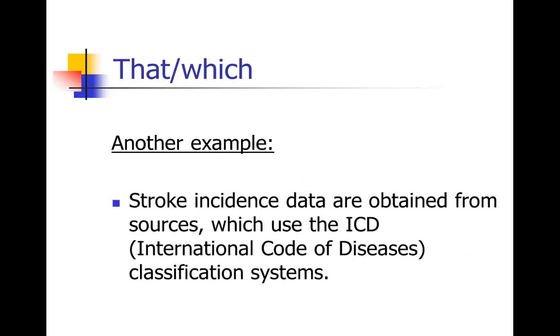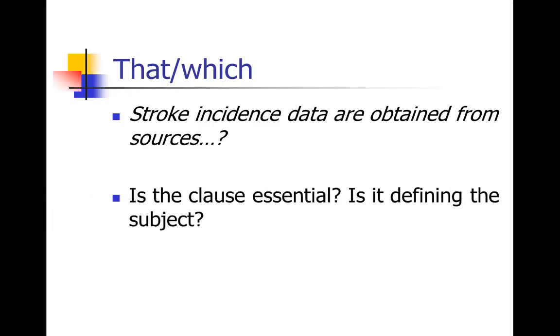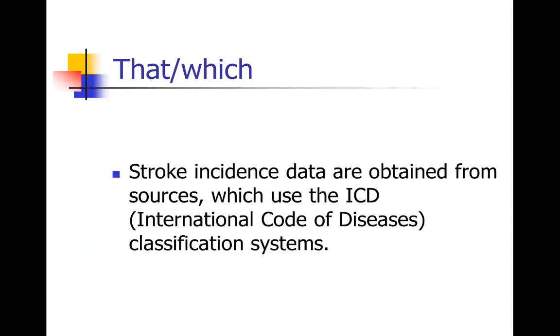One more little example. Stroke incidence data are obtained from sources which use the ICD classification systems. Notice in the original, this is something I was editing, the authors actually did set it off with a comma, so they thought they needed a which. But actually you can see when you read it, the pause there is funny. There really shouldn't be a pause. This is not extra information. If you just stop the sentence at sources, it's a really funny sentence. Would you just say stroke incidence data are obtained from sources? No, we need more information. That information is essential. So that actually should have a that and should not have a comma there. That clause is essential, so use that. You should say stroke incidence data are obtained from sources that use the ICD classification systems. So watch out for that in your writing.